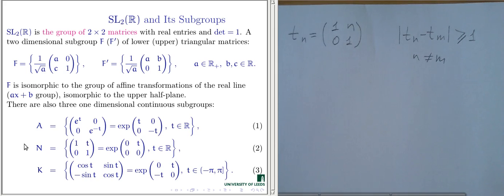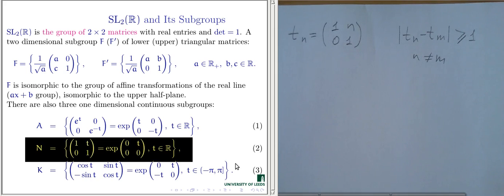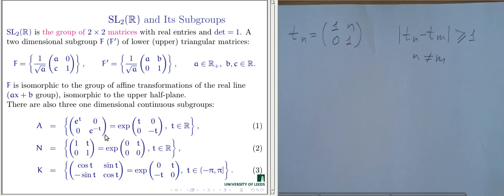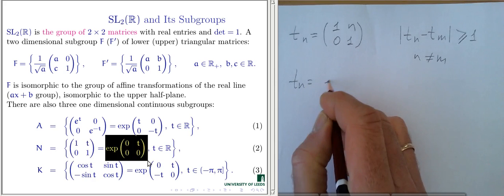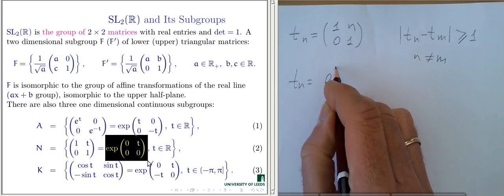In fact, that example is a particular discrete subgroup of the one-parameter continuous subgroup which we will consider in detail today. This is a subgroup of upper triangular matrices, obtained as the exponential of the corresponding product of parameter T and the generator of this subgroup. The generator of this subgroup is a matrix with zero trace, upper triangular, of this form.